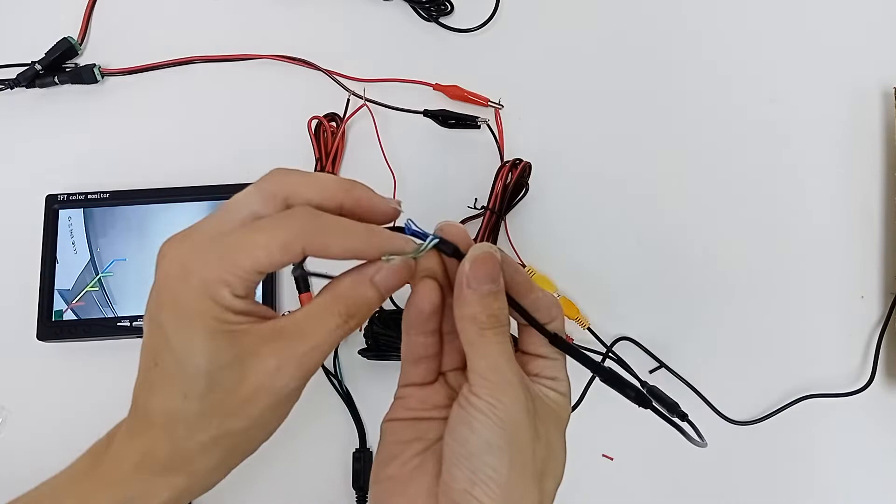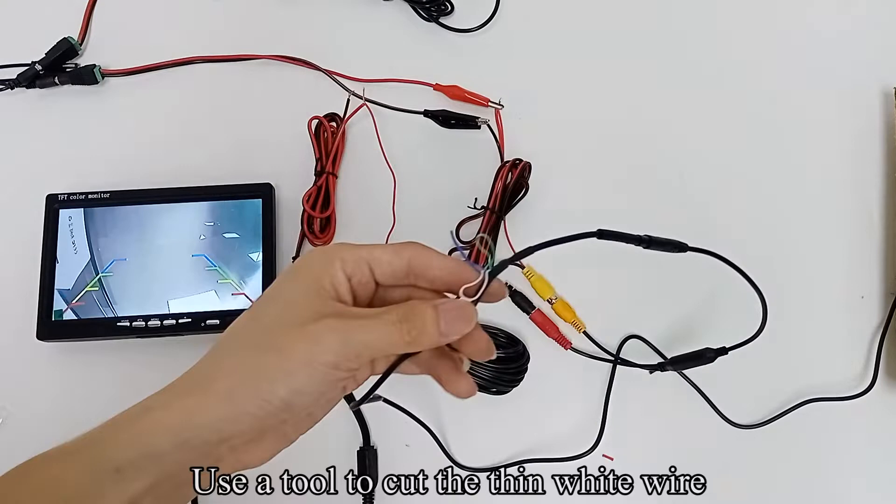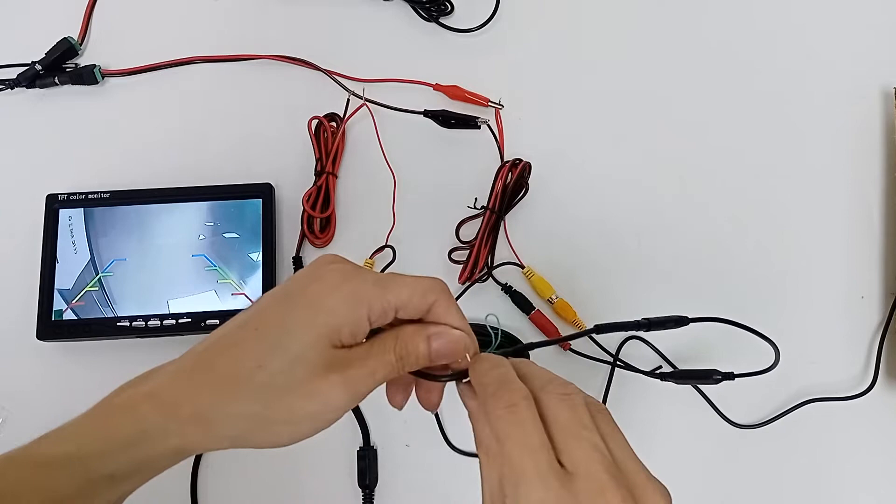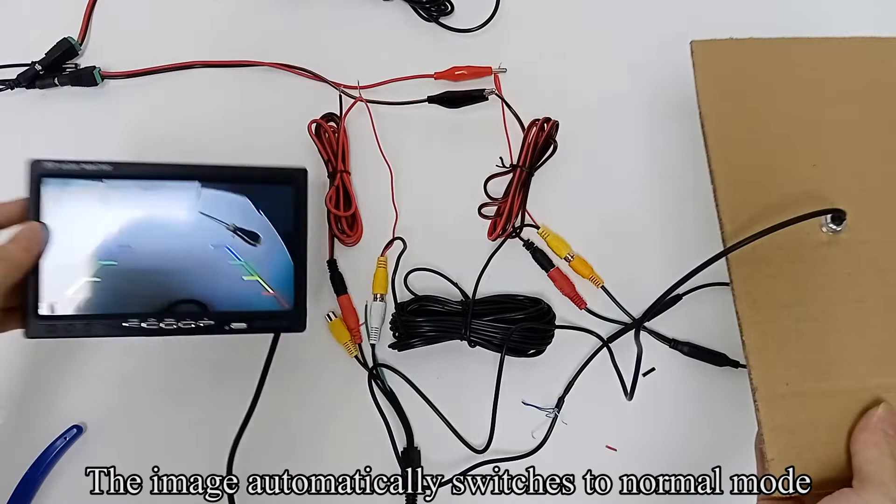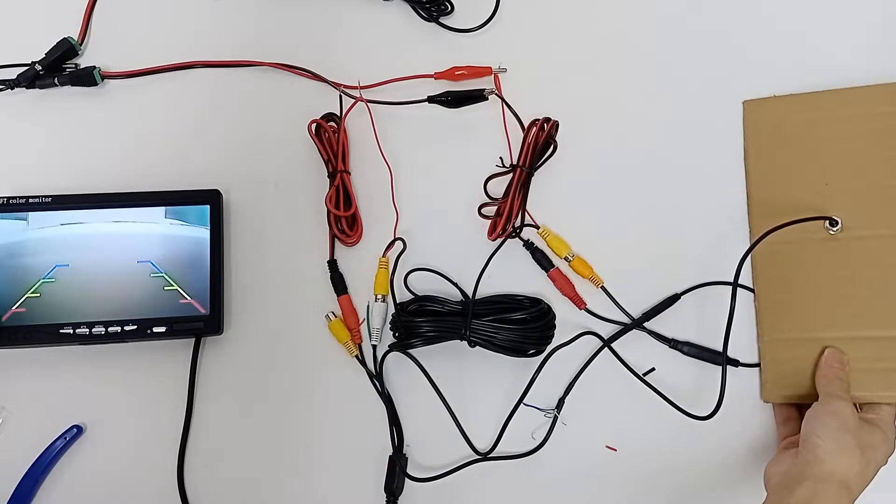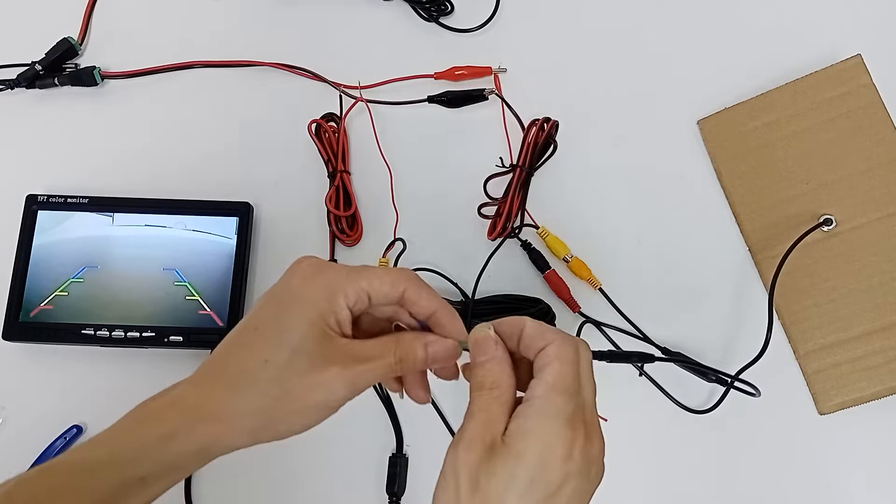There are three thin wires on the extension cable of the camera. Use a tool to cut the thin white wire. Turn off the camera's power and quickly turn it on. The image automatically switches to normal mode. Now the guideline appears on the screen.